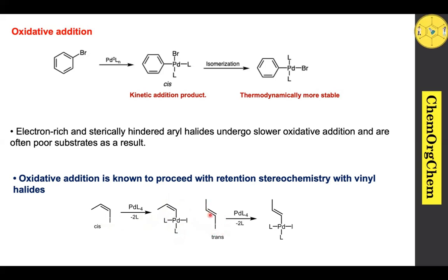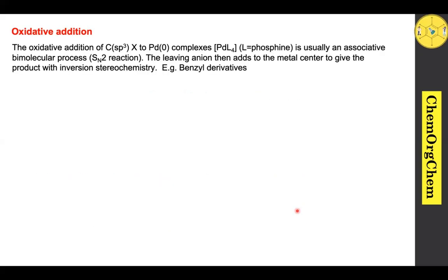Similarly, when you take a trans-vinyl iodide, stereochemistry is also retained. However, the oxidative addition of carbon-sp3 organoelectrophiles usually follows an SN2-type reaction. We already know that SN2-type reactions always produce inversion of stereochemistry — for example, benzoyl derivatives.